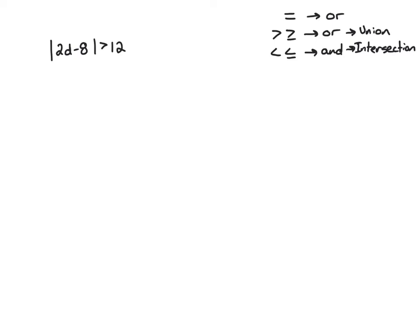Today I want to take a look at two different absolute value inequality situations: one that creates a union situation, and one that creates an intersection. For the first one, we have the absolute value of 2d minus 8 is greater than 12.